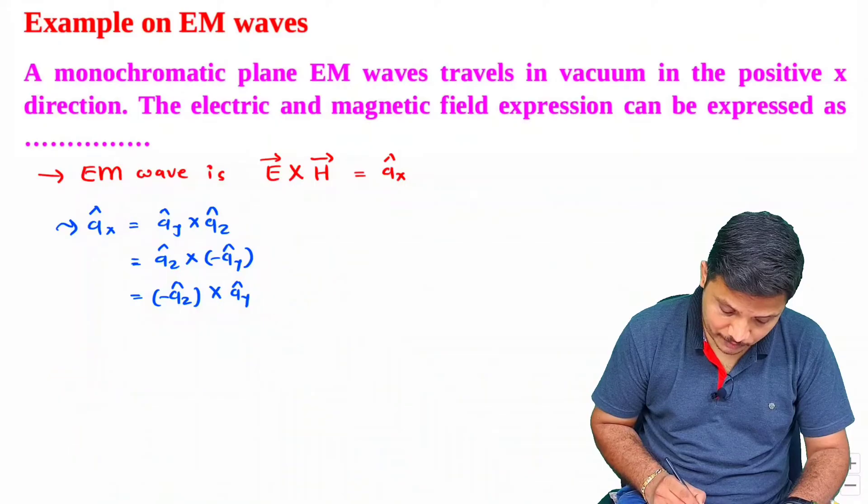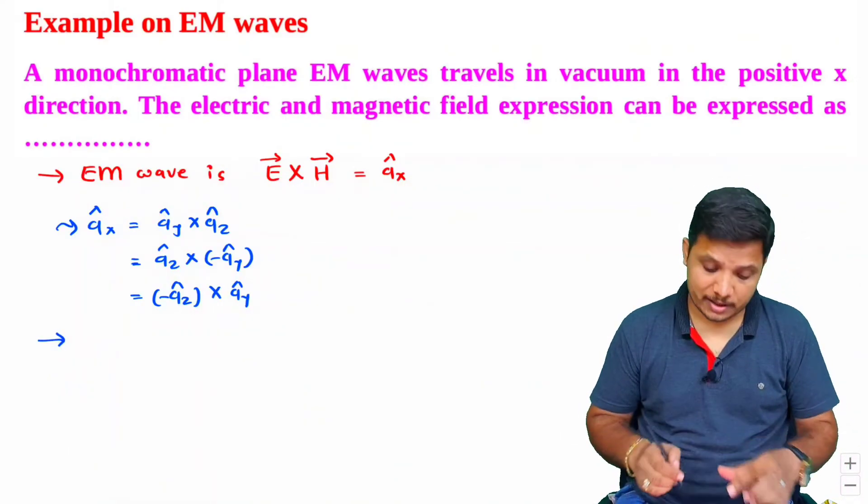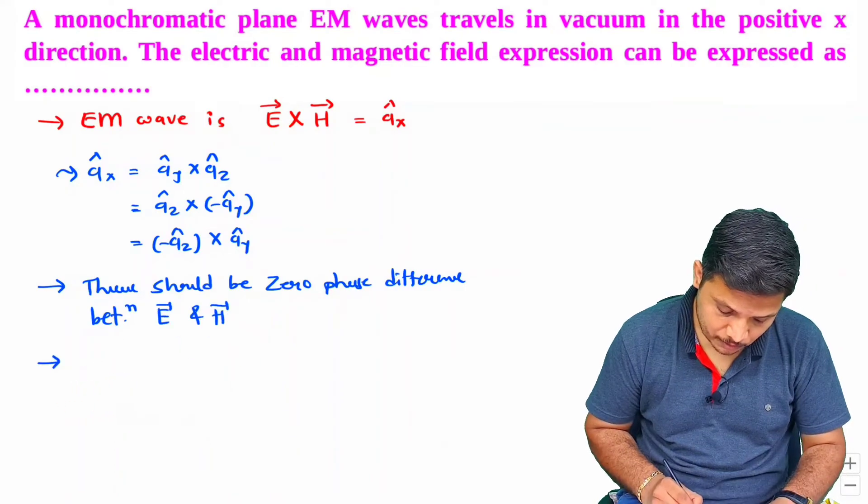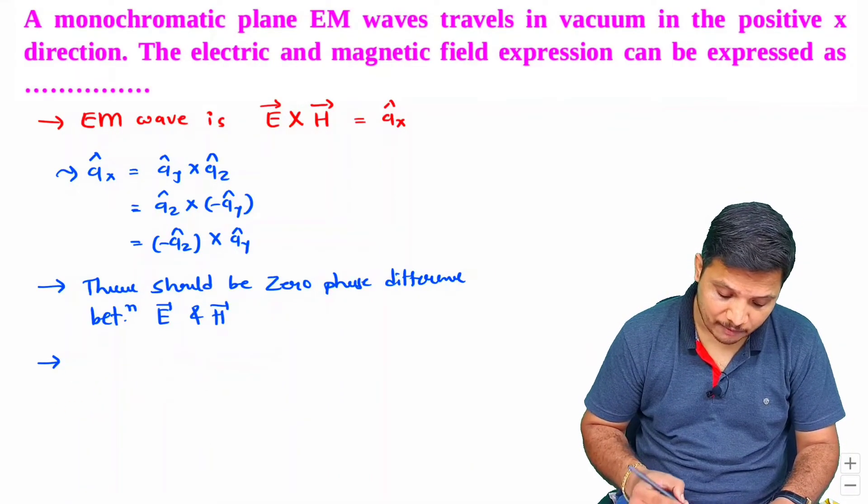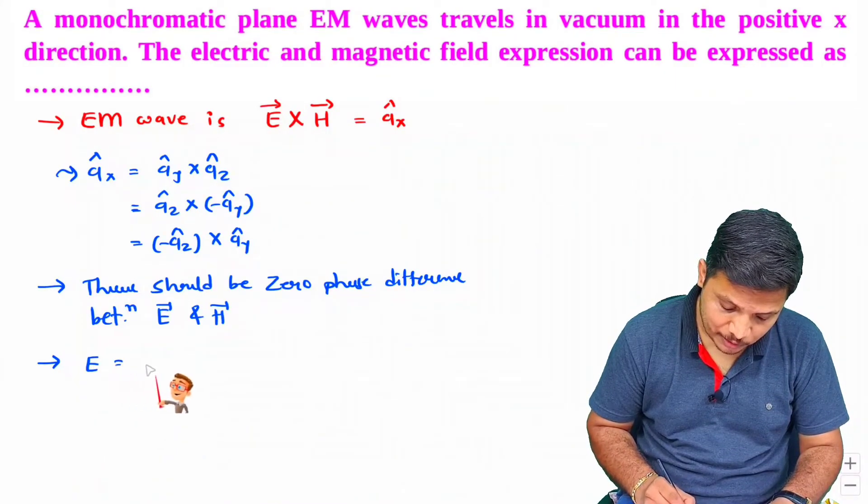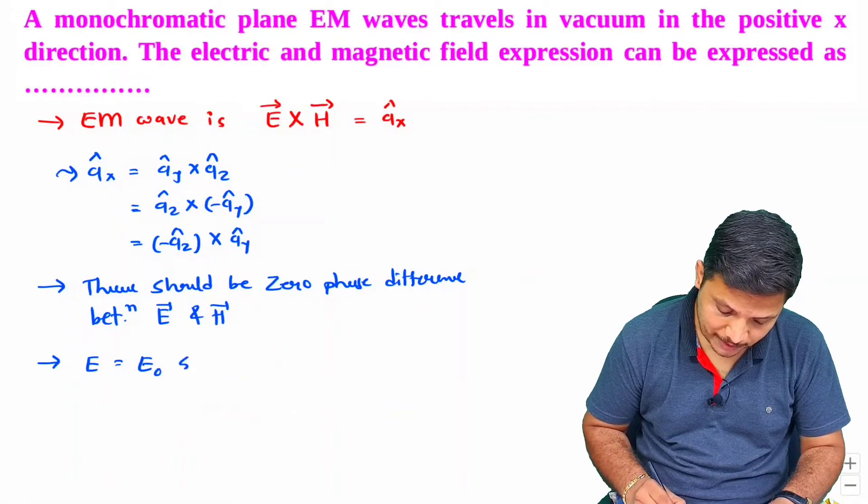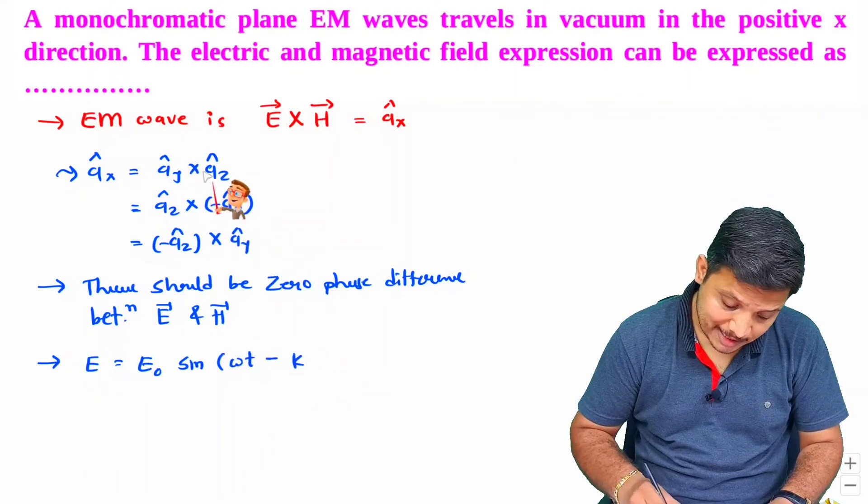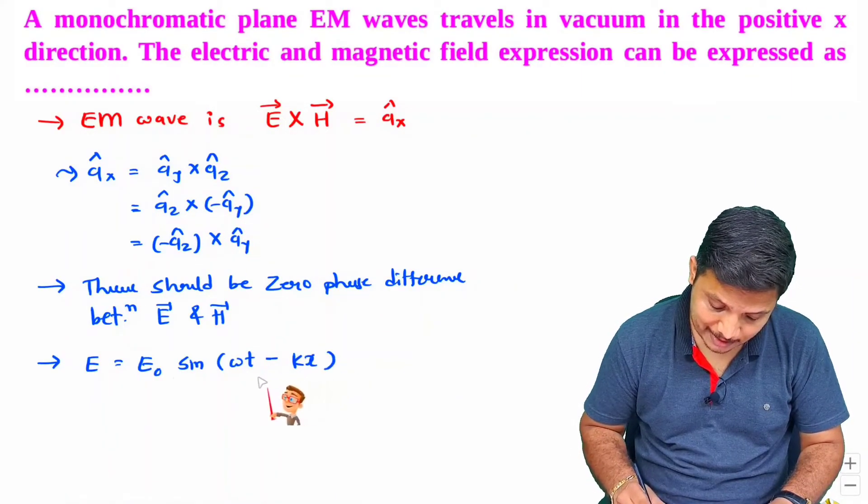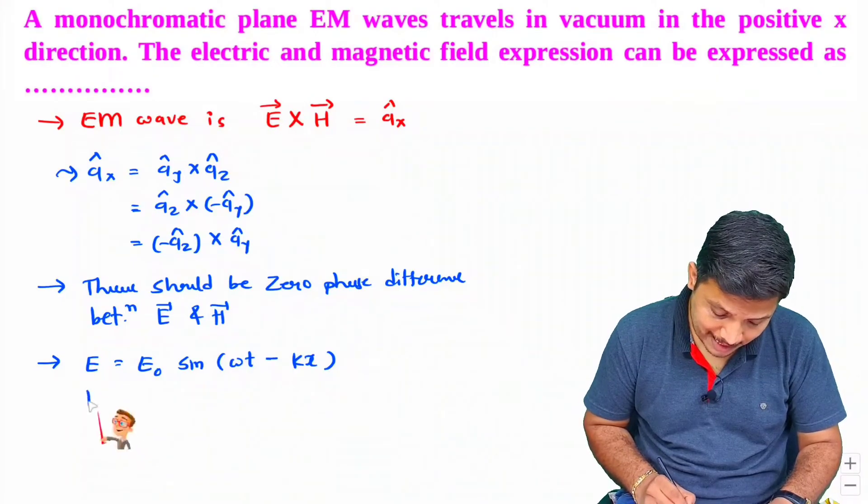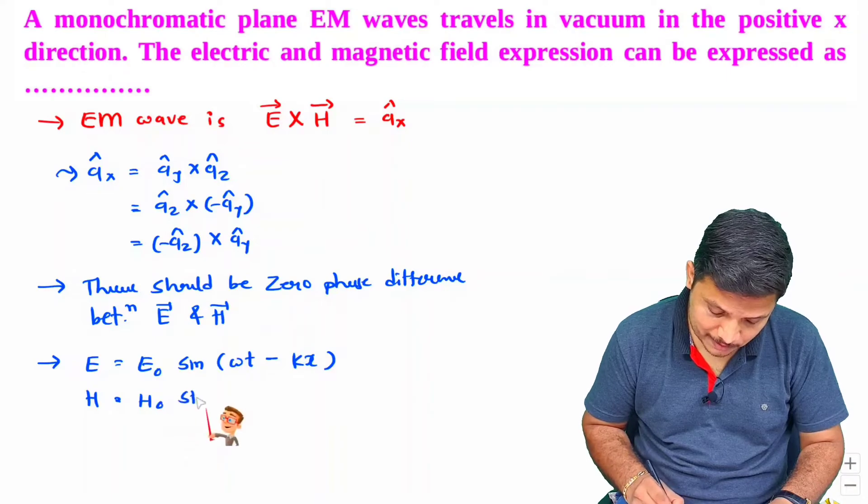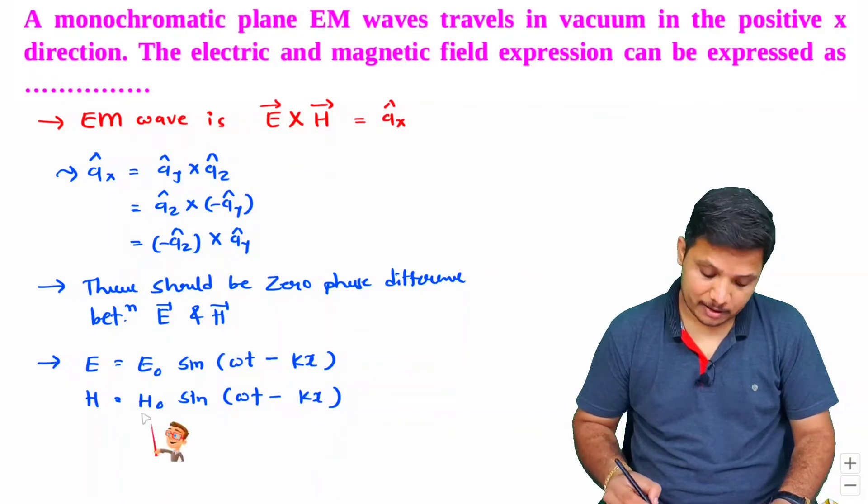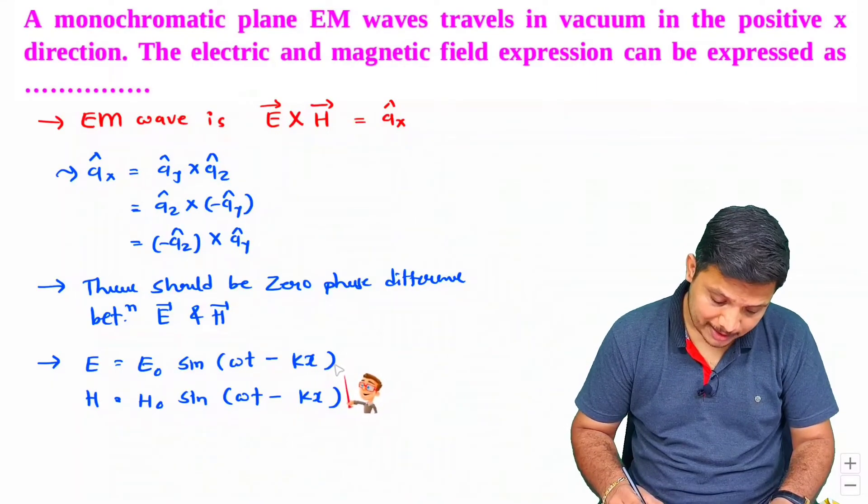Now, next is one should know there is zero phase difference between E and H. So let us try to see that with respect to standard form. So you see I'm writing standard form: E equals E₀ sine (ωt - kx), and magnetic field H equals H₀ sine (ωt - kx). It should be written in this way.